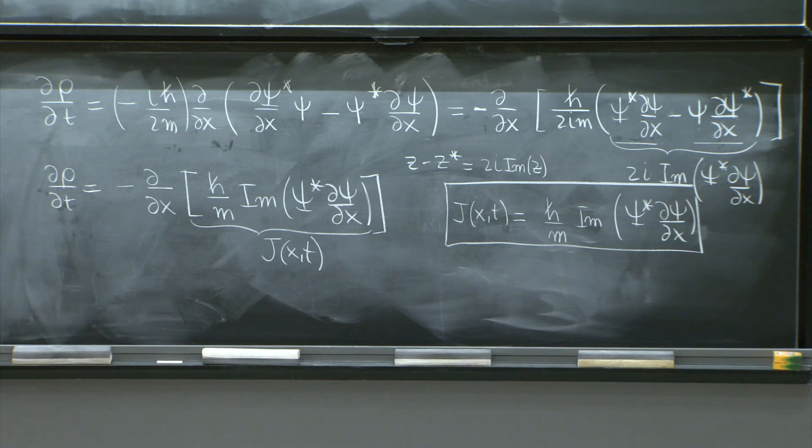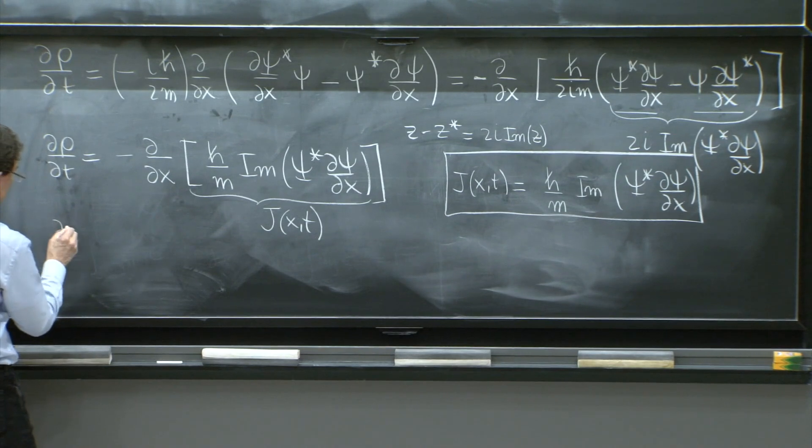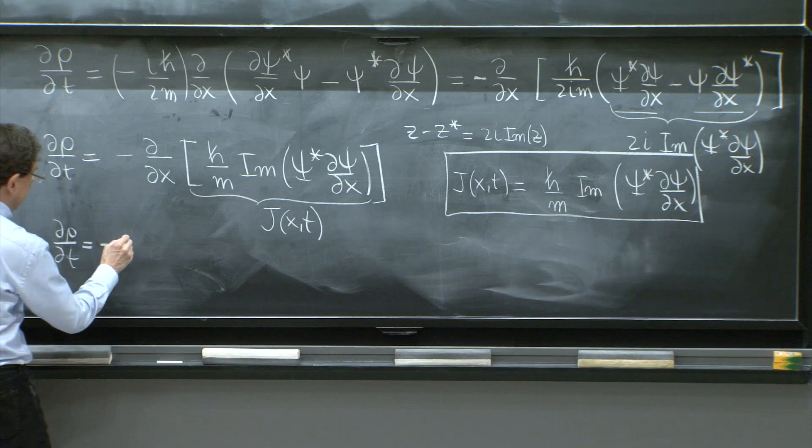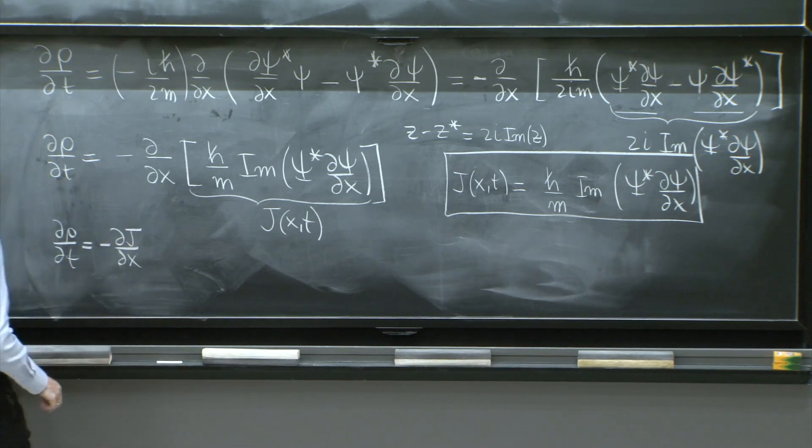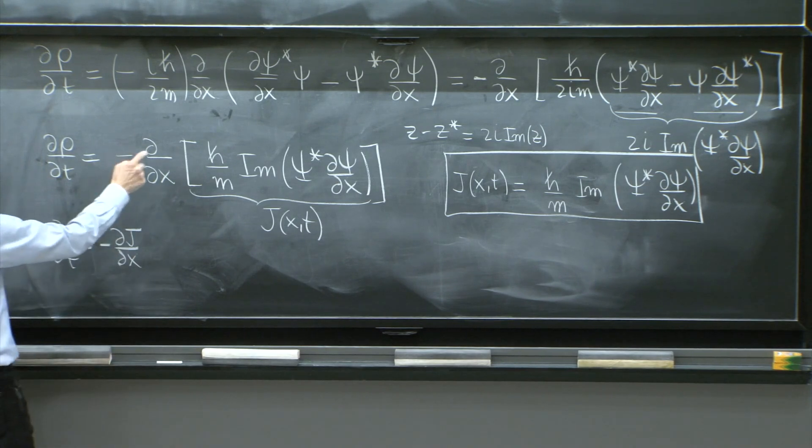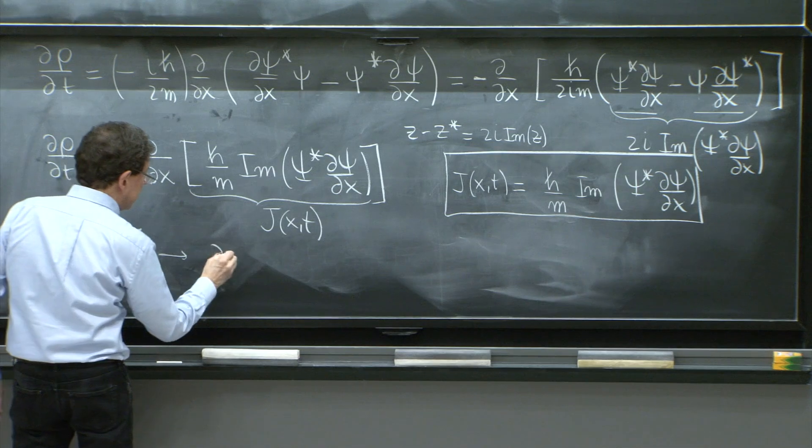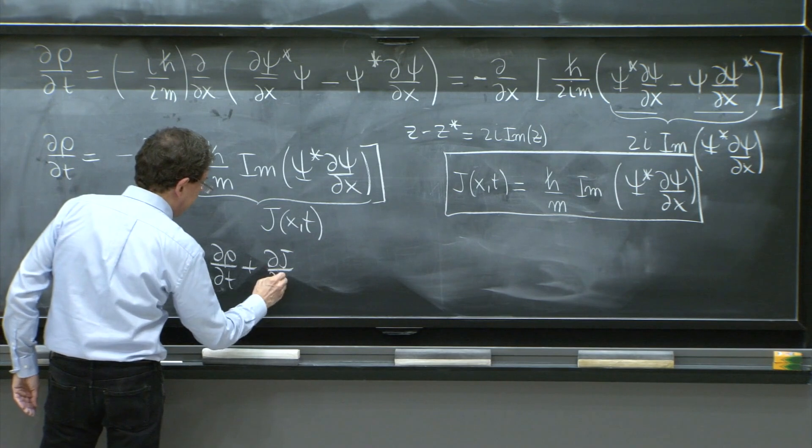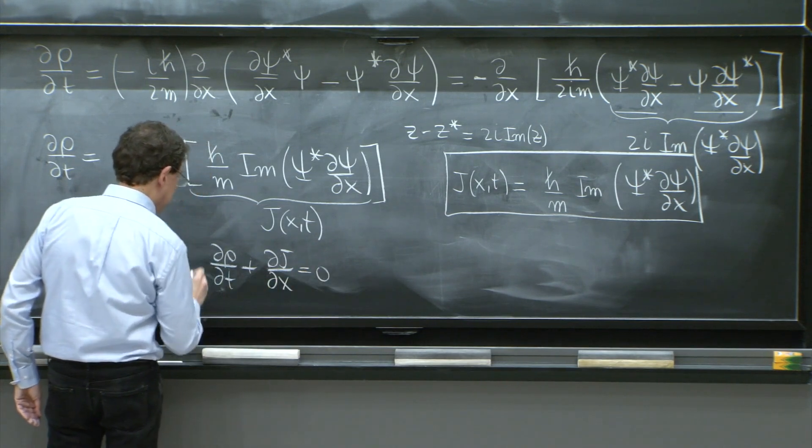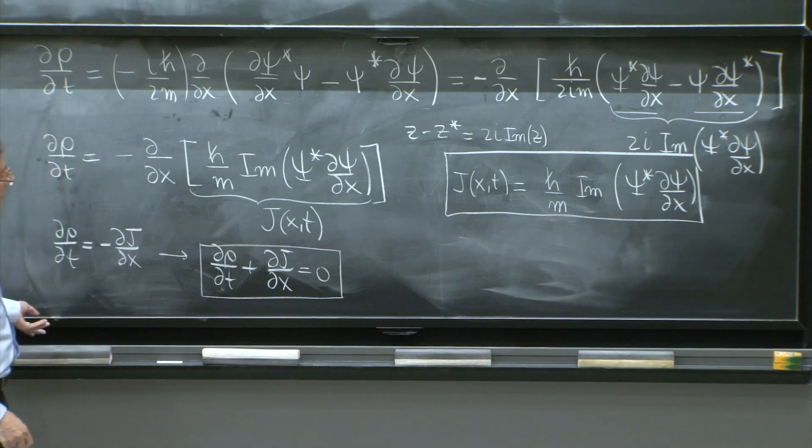So if this is called the current density, you would have an equation here. d rho/dt is equal to minus dJ/dx, or d rho/dt plus dJ/dx is equal to 0.